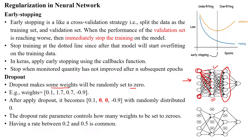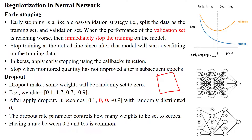When you have a dense network like this, there is the possibility of learning all the patterns in the given training dataset. For example, some people memorize all the lines of code before exams without understanding the concept behind the programming language. Similarly, the neural network memorizes or learns all the patterns from the training data, causing a high error difference between training data and validation data.